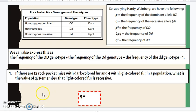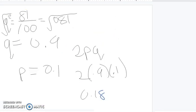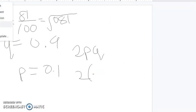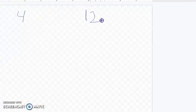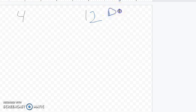This question says if there are 12 rock pocket mice with dark colored fur and 4 with light colored fur in a population, what is the value of Q? So we have 12 with dark and 4 with light. We have 12 with dark and 4 with light. Remember the dark is both the homozygous dominant as well as the heterozygous, and the light are the homozygous recessive.